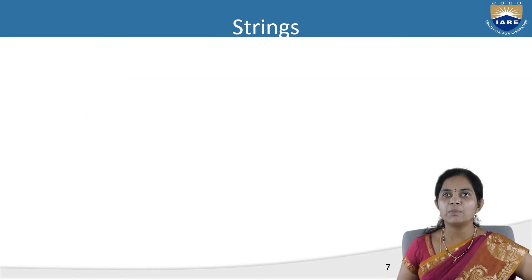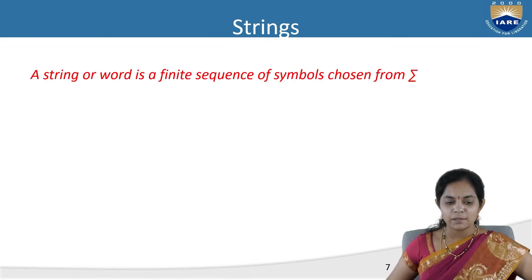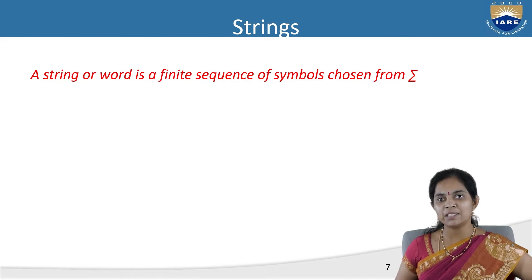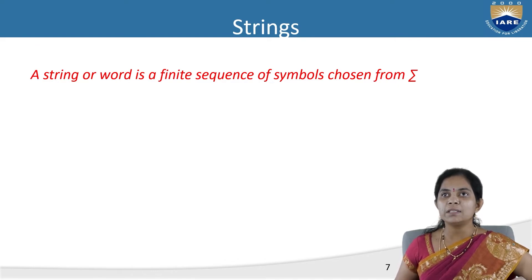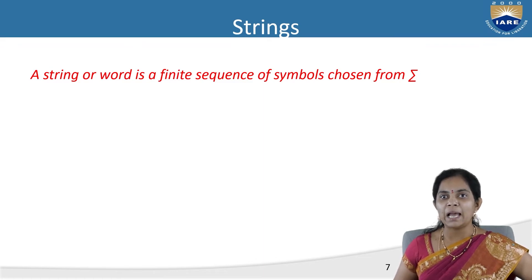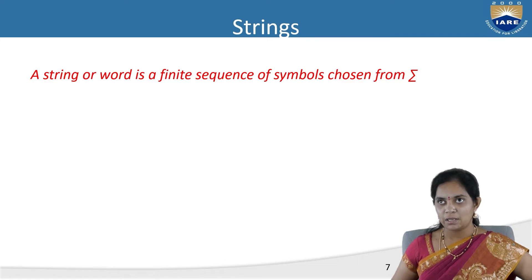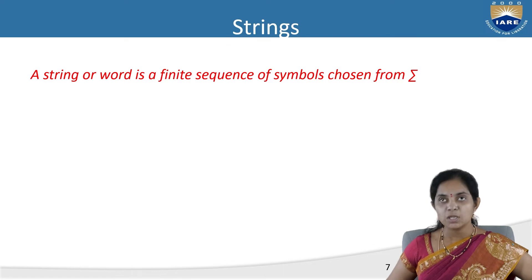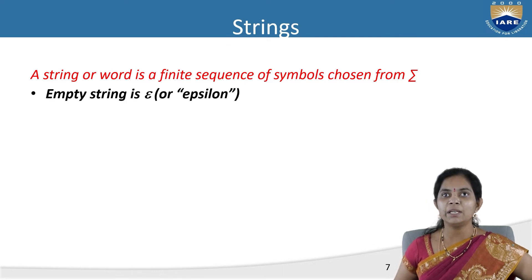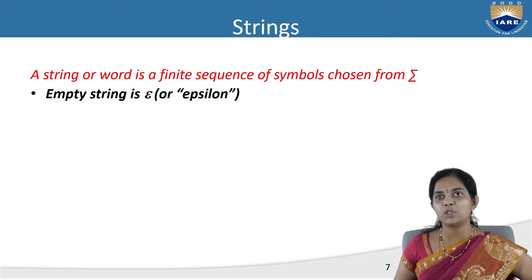The next concept is strings. A string or word is a finite sequence of symbols. Previously we discussed alphabets; a string is nothing but a collection of alphabets — symbols chosen from sigma. The empty string is epsilon, and it is also considered a string.